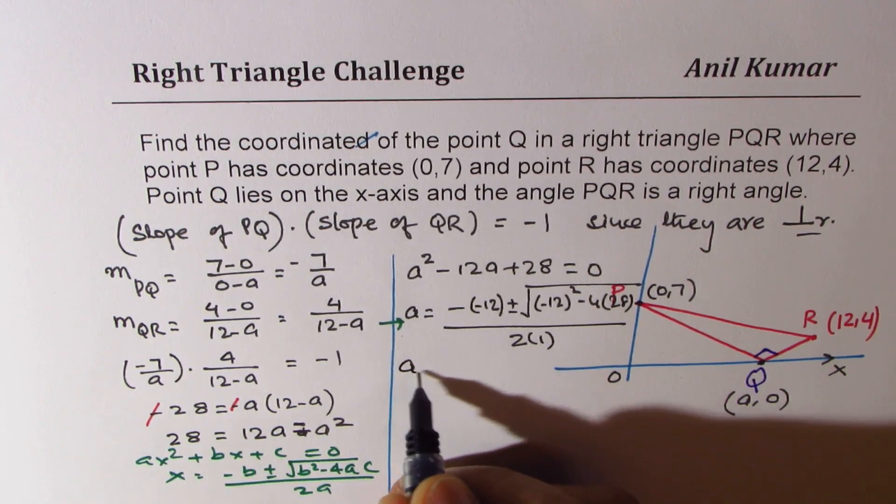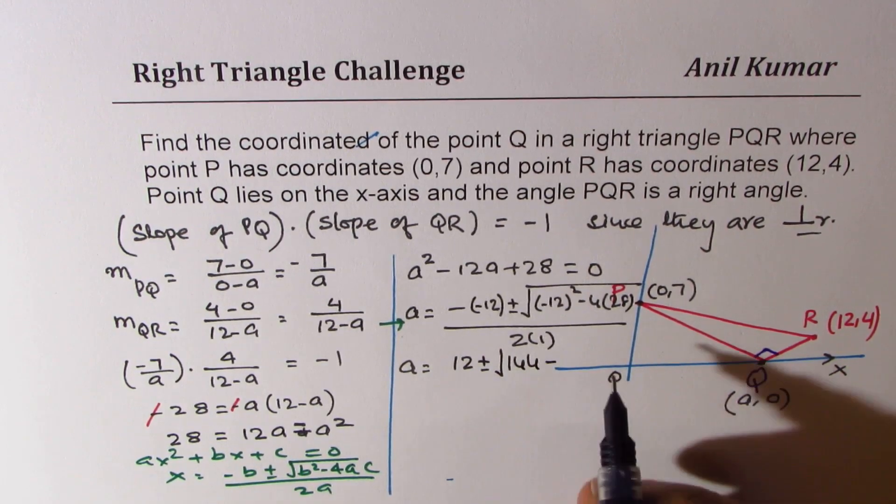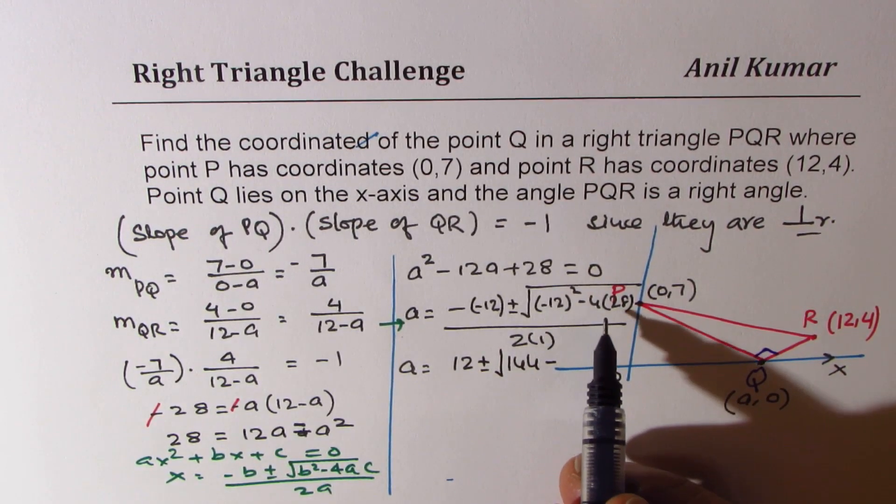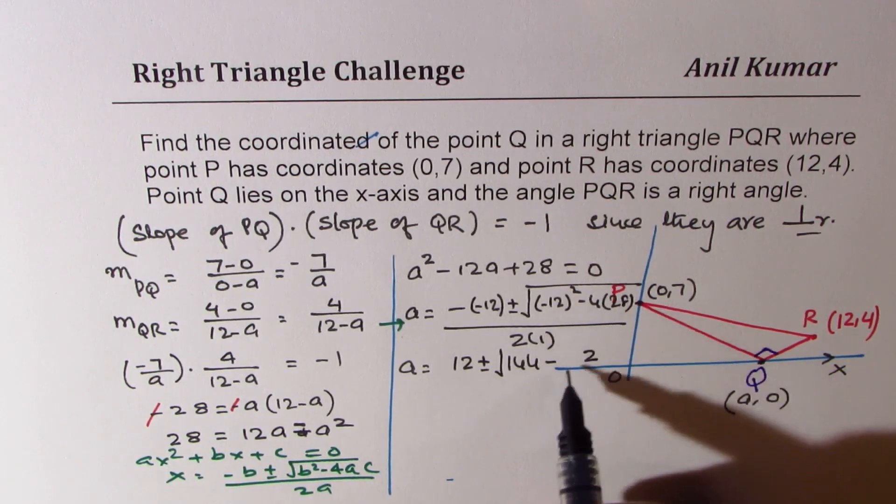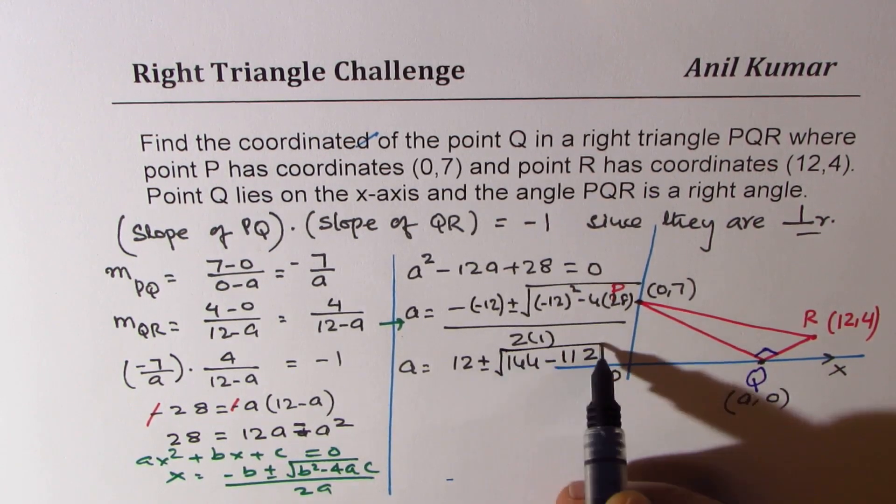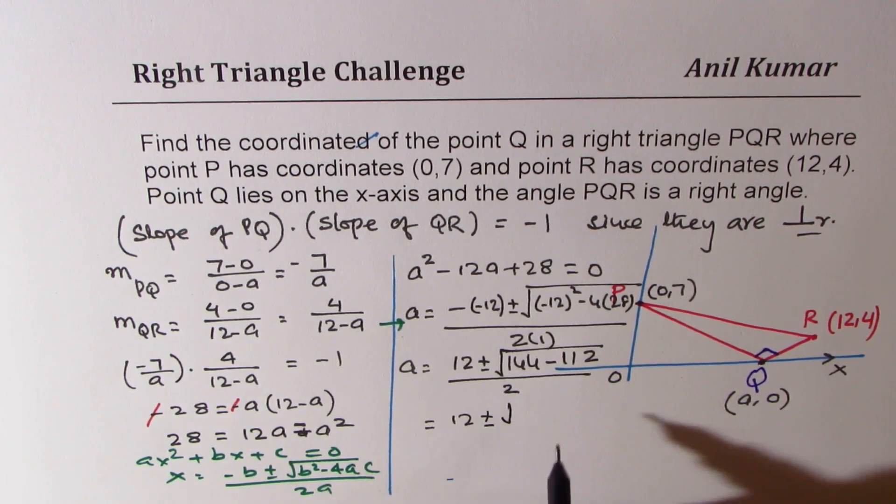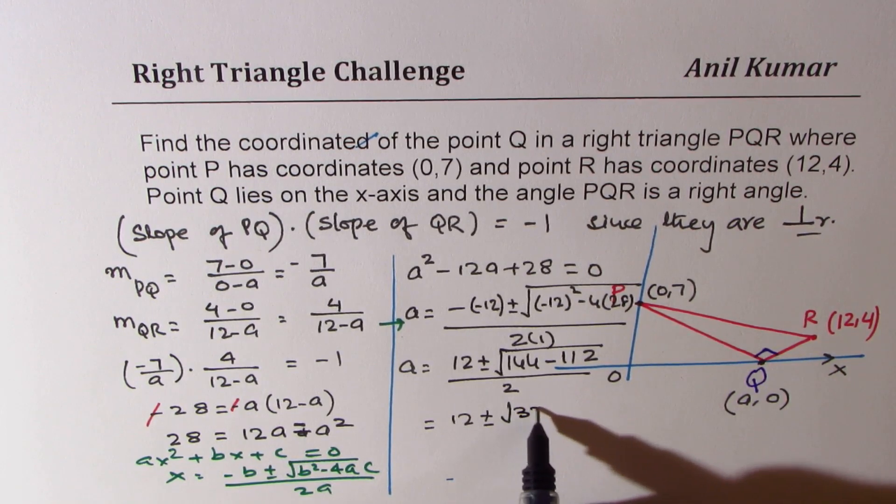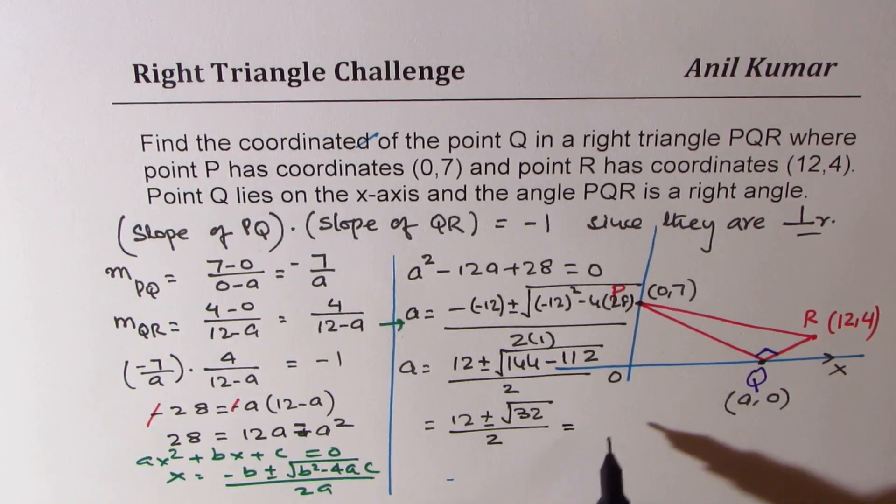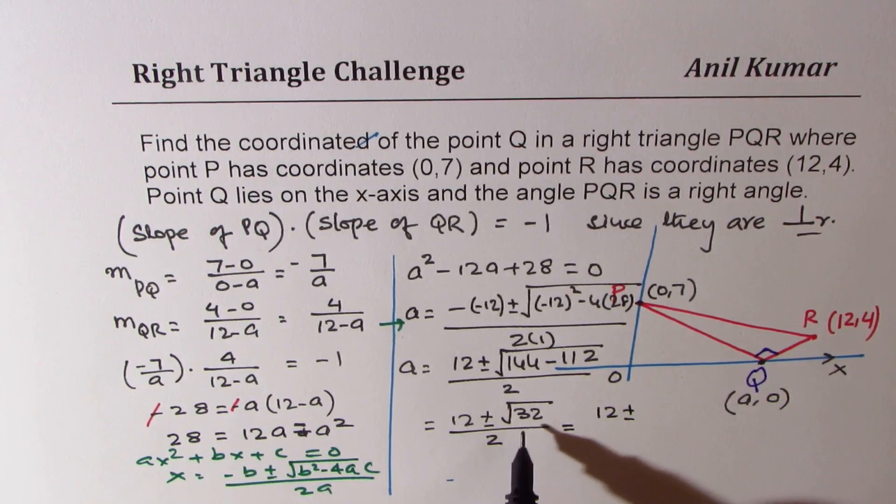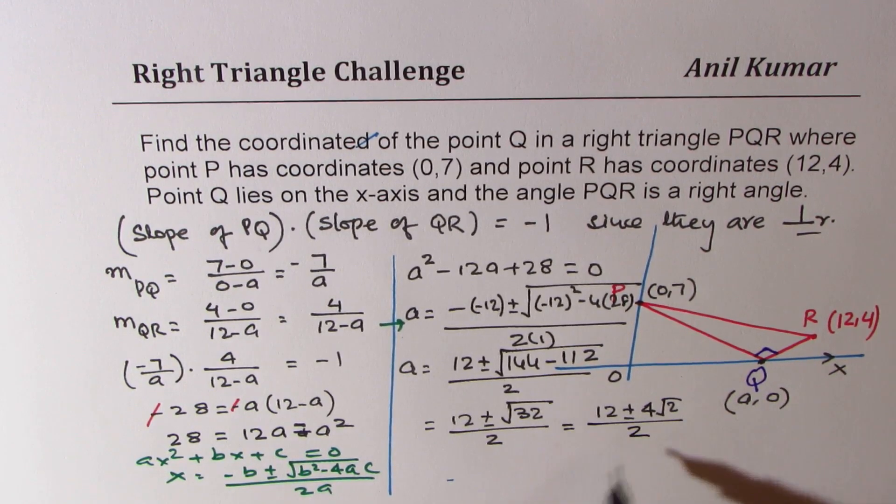So we get a equals to 12 plus minus square root of 144 minus 28 times 4. 8 times 4, 32, 3, 112 divided by 2. So that gives us 12 plus minus square root of 32 divided by 2. So this is 12 plus minus, 32 is 16 times 2. We could write this as 4 square root 2 over 2.